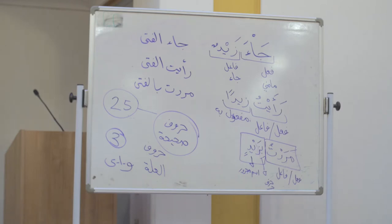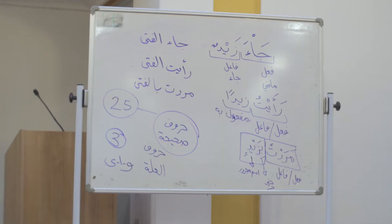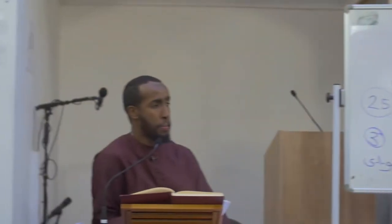Waw, Alif, and Ya are three naughty letters. They don't behave themselves — they're an exception. Just to show you how the classes are connected.